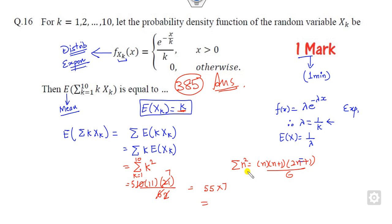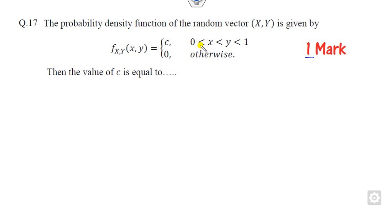So you can see what is the concept behind that — you have to identify the exponential distribution, find its mean, and then solve for the right answer. Now look at the next question, where you have to find the constant C. The domain is given, so you need to draw the graph. X is greater than 0, so this is the line X=0.